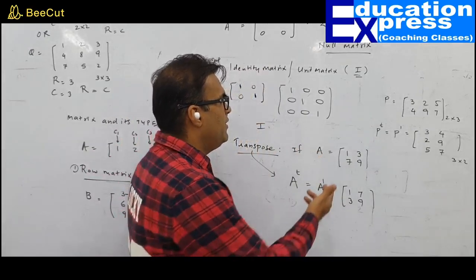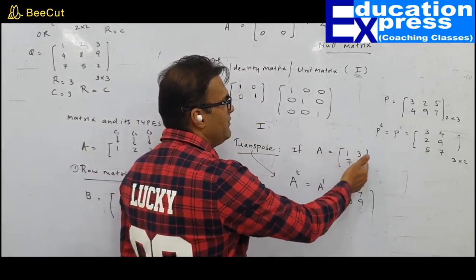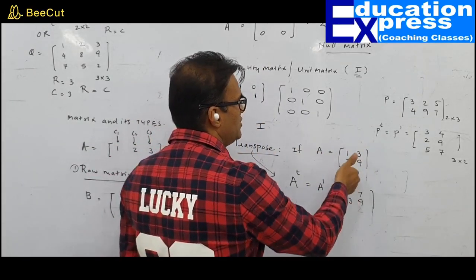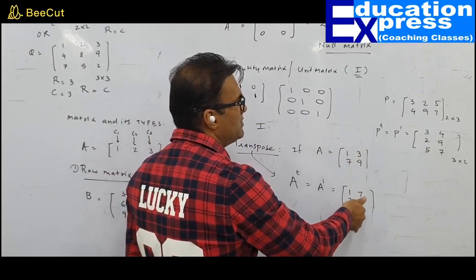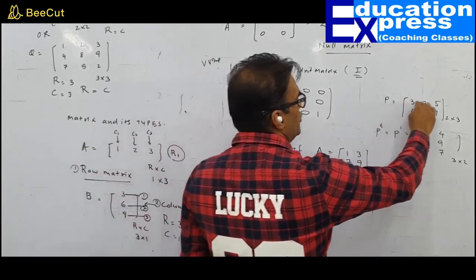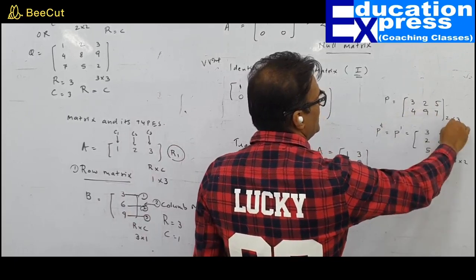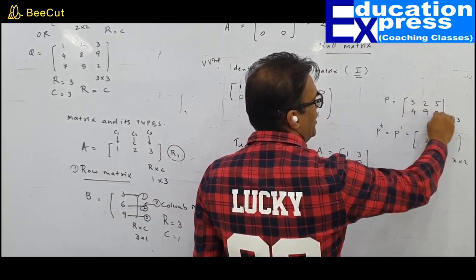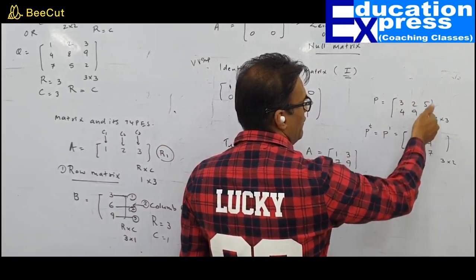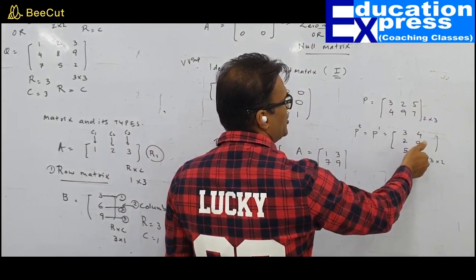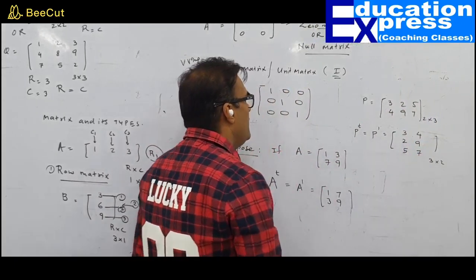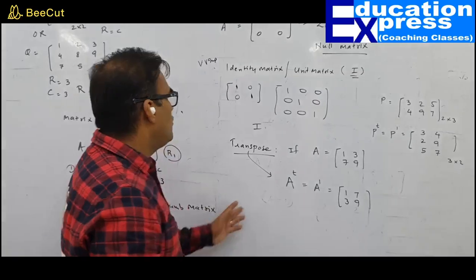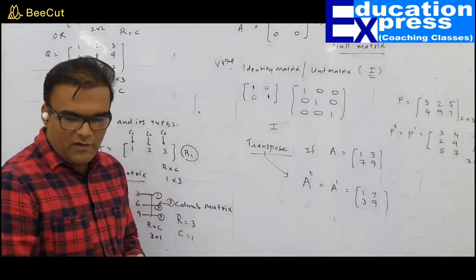To summarize transpose: if elements 1, 3, 7, 9 were earlier rows, now they are columns in the transpose. Elements 3, 2, 5 and 4, 9, 7 were earlier rows, now they have changed to columns. This is what is called a transpose matrix.